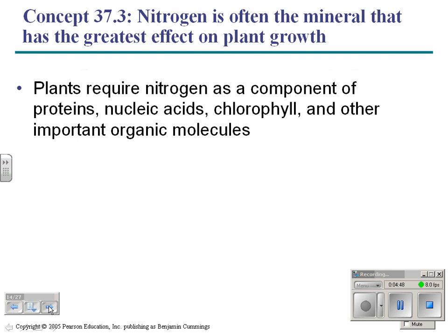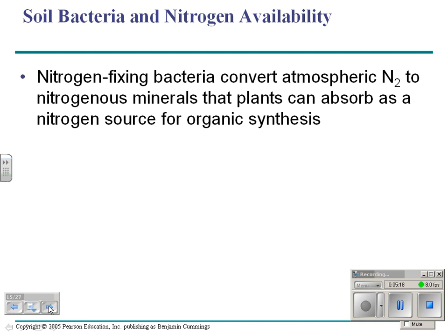The next concept is nitrogen specifically. Plants require nitrogen because it's found in proteins, DNA, and chlorophyll — the most important organic molecules. So plants must have nitrogen, and this is usually what we call a limiting factor. How much of it there is in the soil or in the water limits the amount of growth you get from plants. We'll look at this again in Chapter 51 with Ecology.